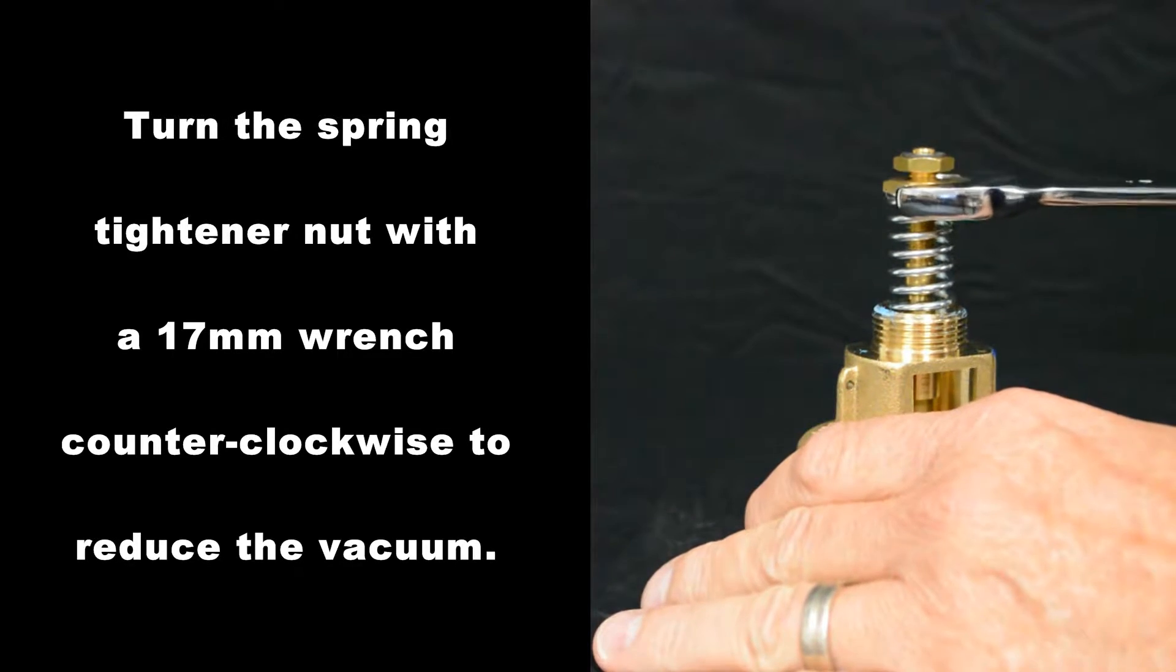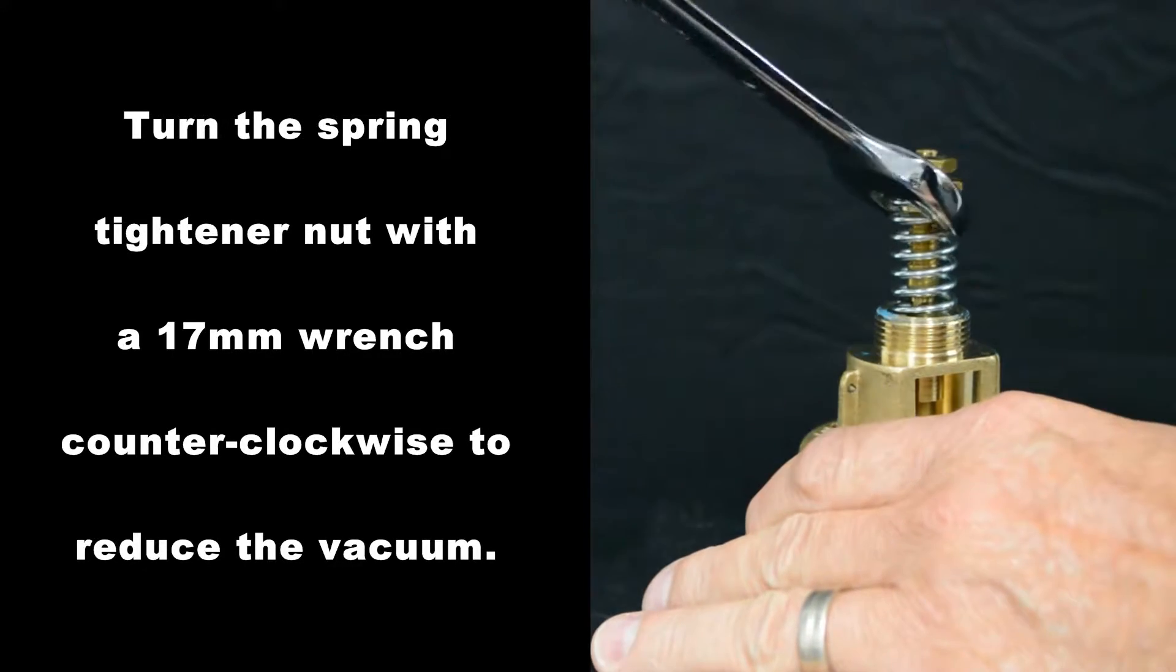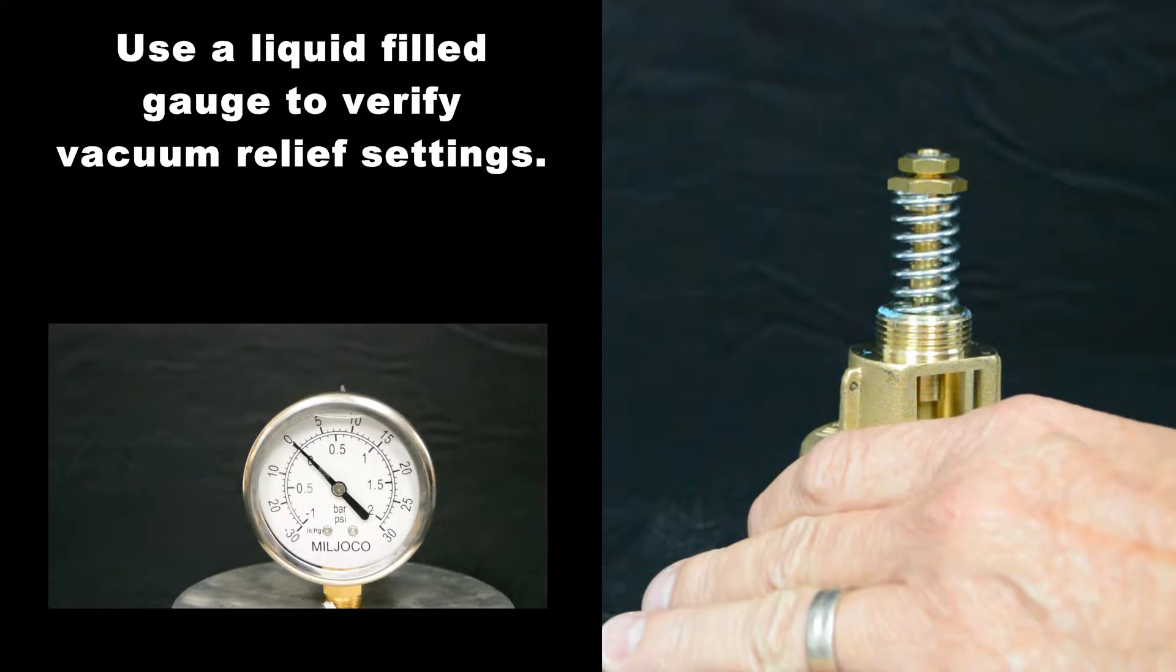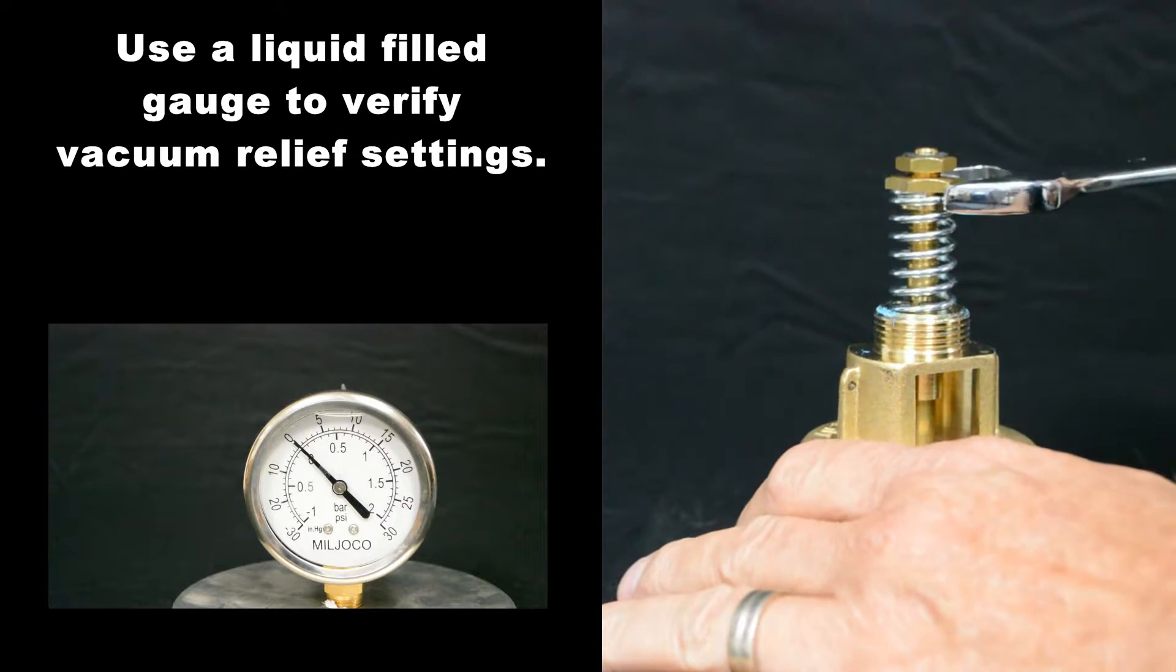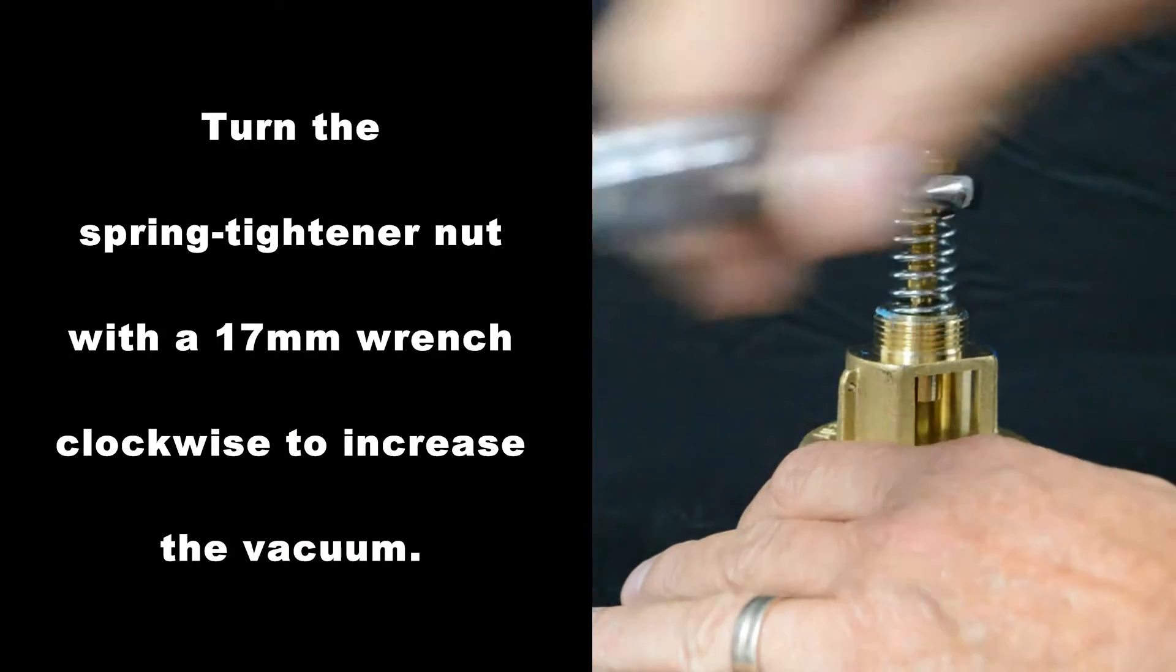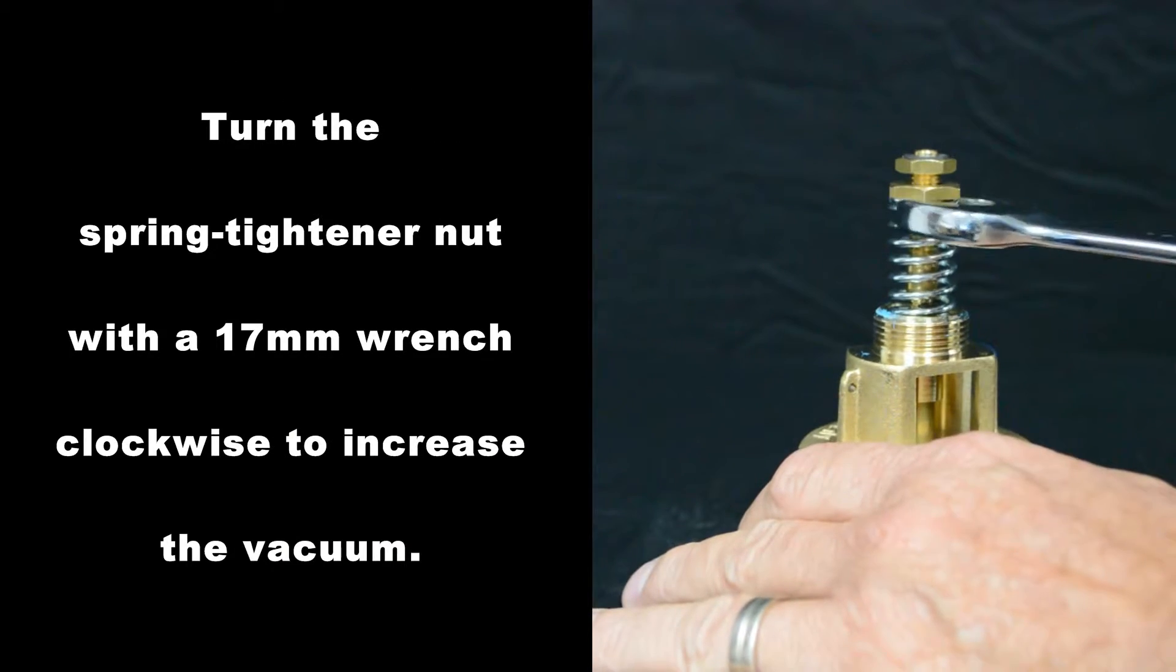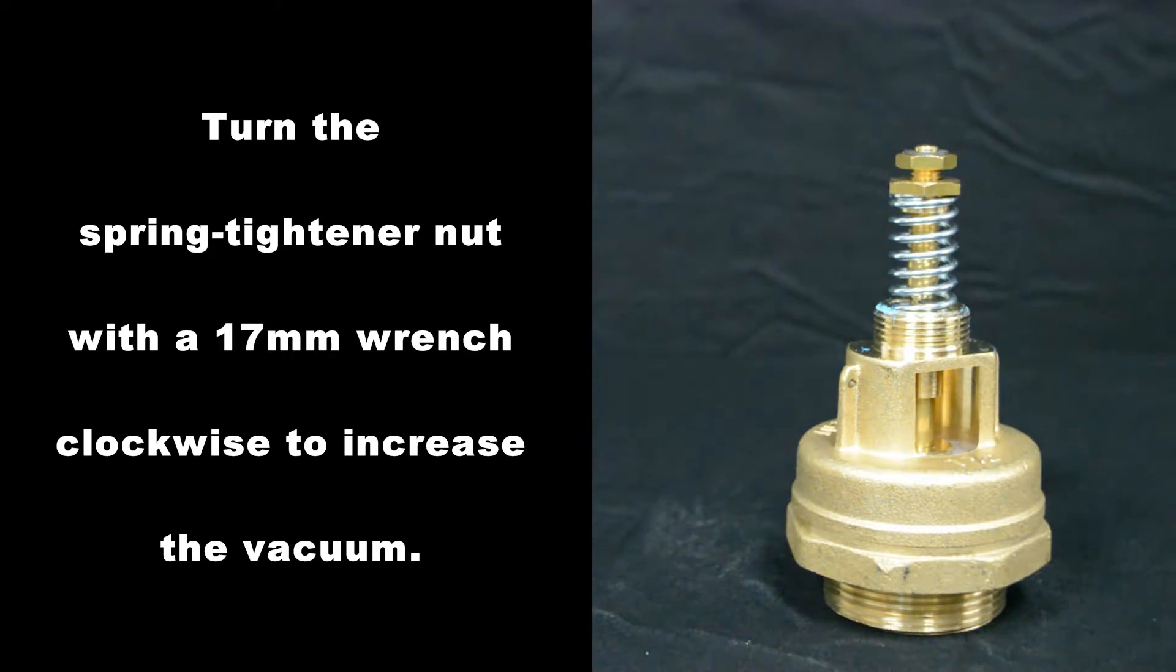Turn the spring tightener nut with a 17mm wrench counterclockwise to reduce the vacuum. Use a liquid filled gauge to verify vacuum relief settings. Turn the spring tightener nut with a 17mm wrench clockwise to increase the vacuum.